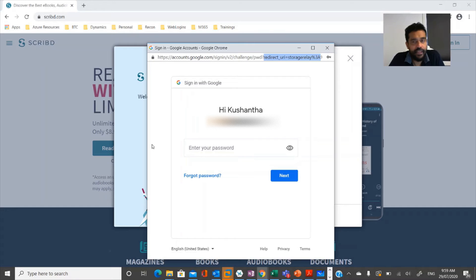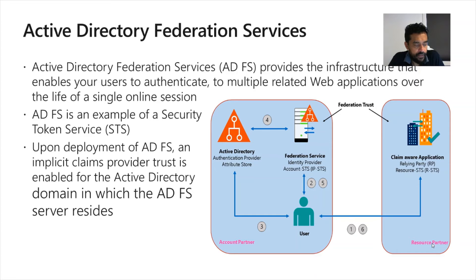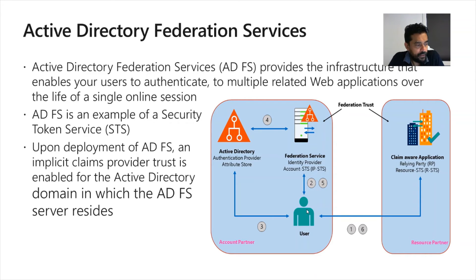When it comes to Active Directory Federation, there are two entities: one is the account partner, which hosts authentication services — usernames and passwords, simply credentials — and the other is the resource partner, which hosts a resource. This application is known as a claims-aware application. Before starting this authentication mechanism, you need to have a federation trust between the account partner (identity provider) and the resource partner. Once you have that, the user can authenticate using federation services and Active Directory, then use that trust to access services from the resource partner. This is known as federation trust and federation services.